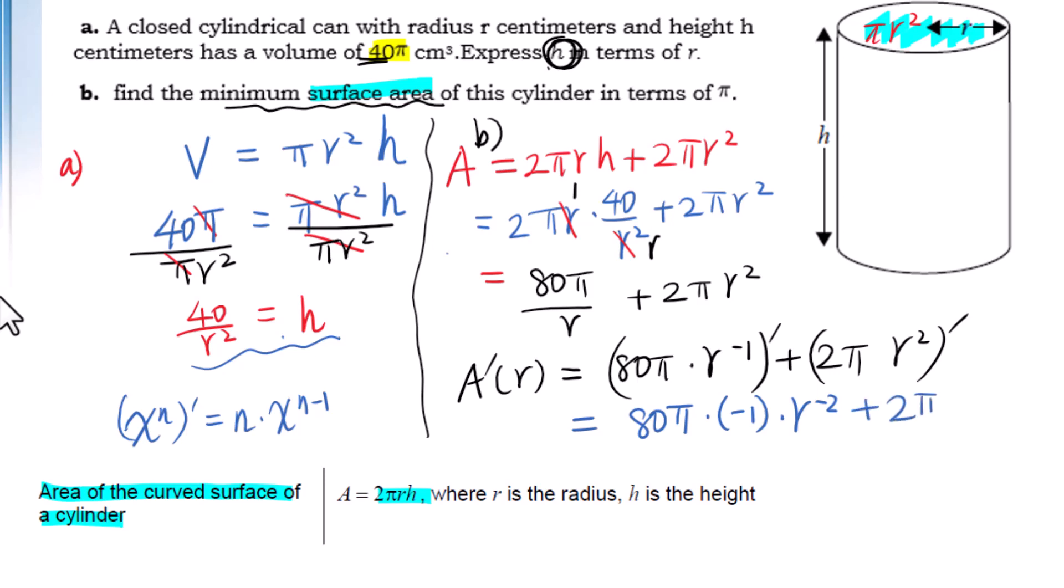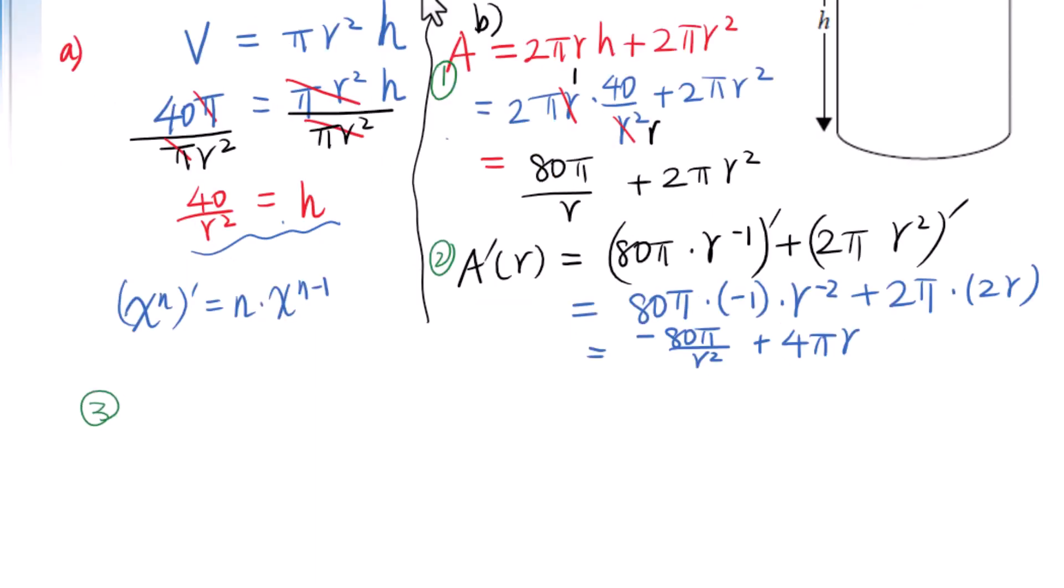First, 80π as a coefficient times negative 1 times r^(-2). Simplify: equals -80π/r² plus 4πr. Third step, we will set A'(r) equals 0. Solve for r: -80π/r² plus 4πr equals 0.